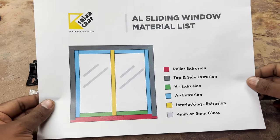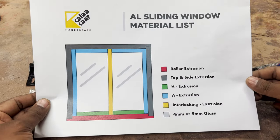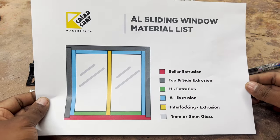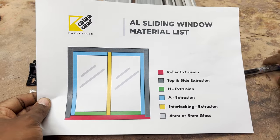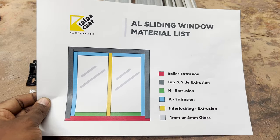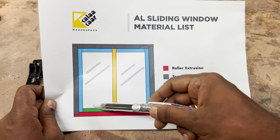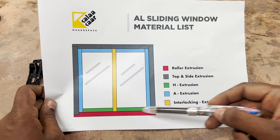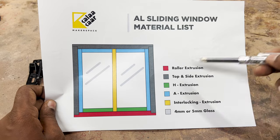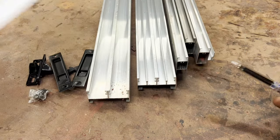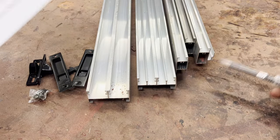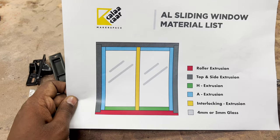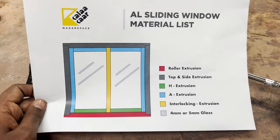First, let us take a look at the list of materials that we need when we are going to create an aluminum sliding window. I have marked everything in different colors so that it is easier to explain, and I also have some pieces here so I am going to cross reference it and tell you about the things.